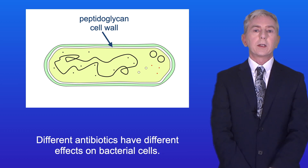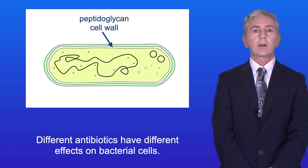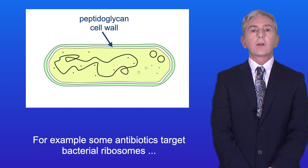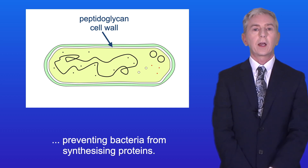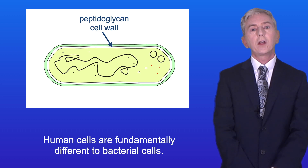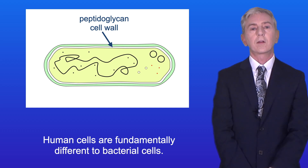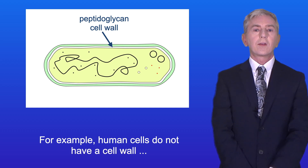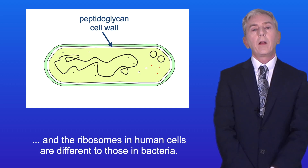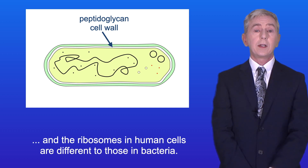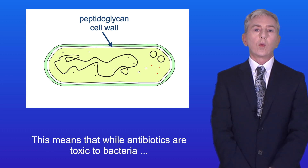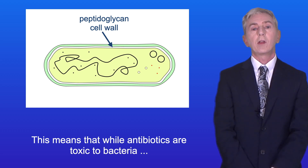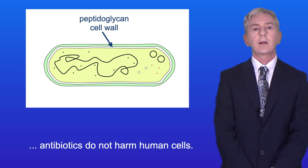Different antibiotics have different effects on bacterial cells. For example, some antibiotics target bacterial ribosomes, preventing bacteria from synthesizing proteins. Human cells are fundamentally different to bacterial cells — human cells do not have a cell wall, and the ribosomes in human cells are different to those in bacteria. So while antibiotics are toxic to bacteria, antibiotics do not harm human cells.